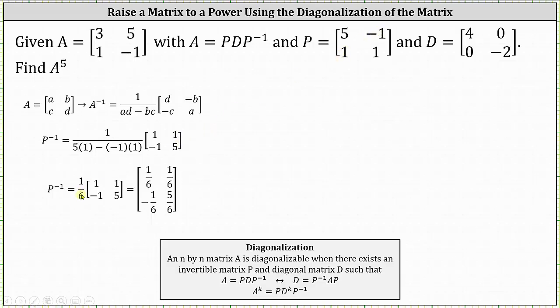Simplifying, we have one sixth times the matrix with entries one, one, negative one, five, which gives us the inverse of matrix P.